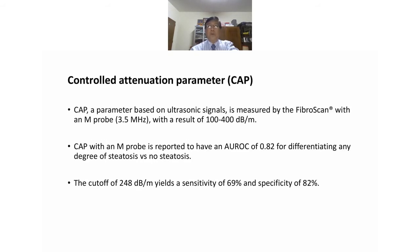Another method is the controlled attenuation parameter (CAP), based on ultrasonic signals used by FibroScan with results ranging from 100 to 400 decibels per meter. CAP has an AUROC of 0.82 for differentiating any degree of steatosis versus no steatosis. A cutoff of 240 dB/m yields a sensitivity of 69% and specificity of 82%.